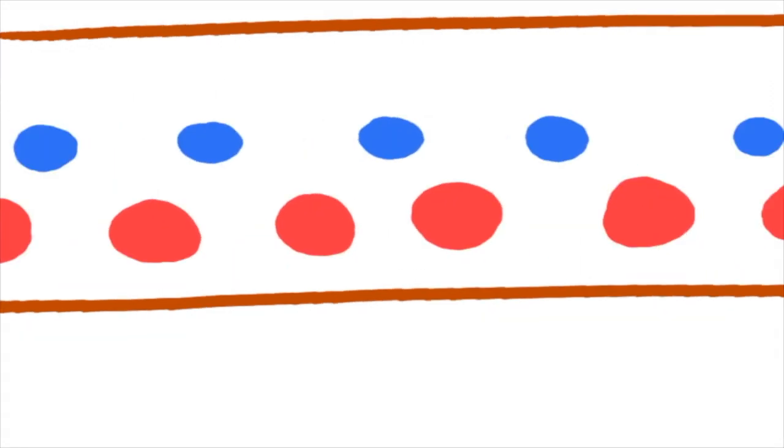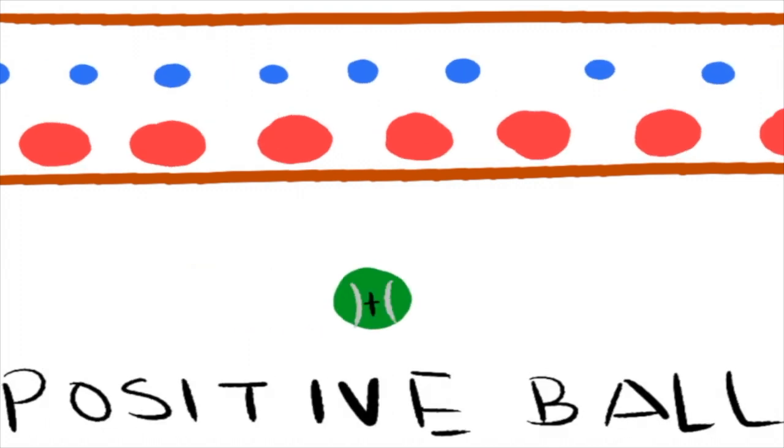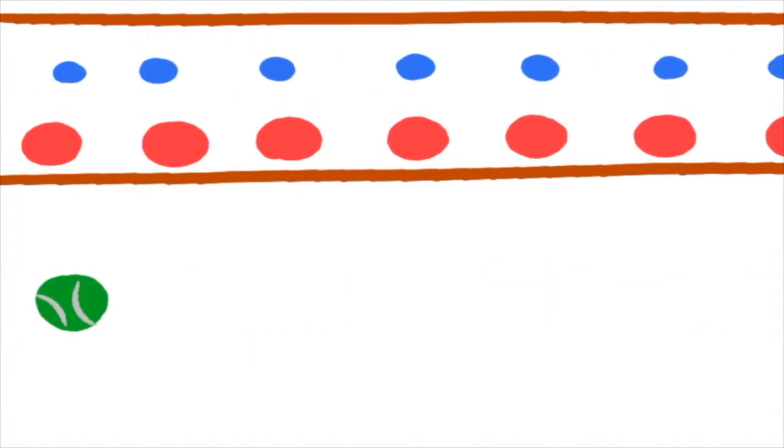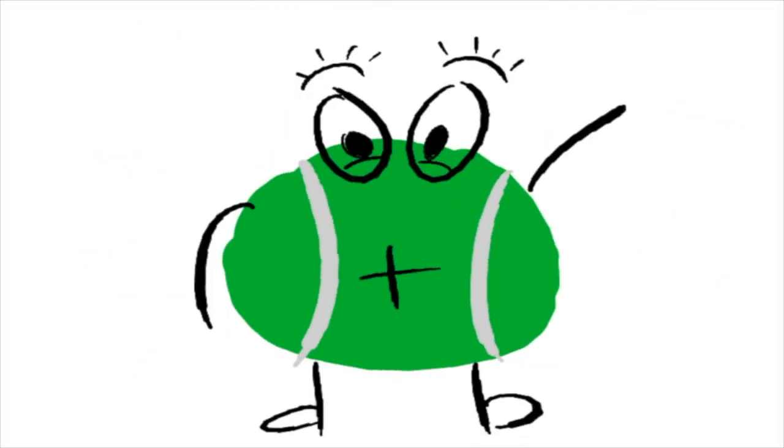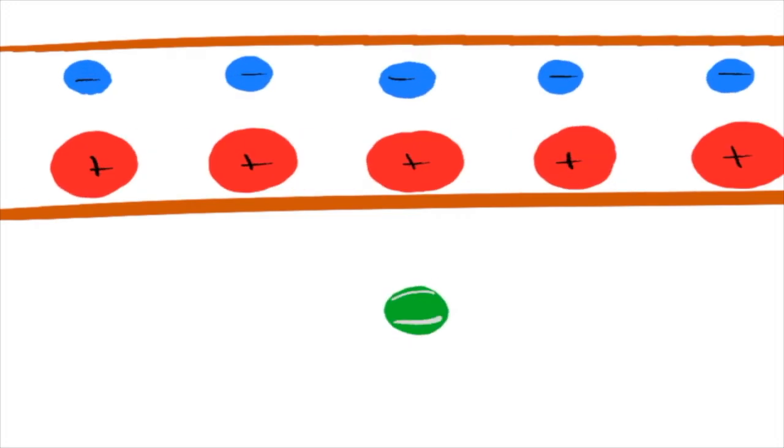If I throw a positively charged ball this way at the same speed as the electrons, you might think that nothing happens to it since the total charge on the wire is zero. But let's look at the wire from the ball's point of view. Since the ball is traveling with the electrons, they appear stationary. The positive charges look like they're moving the other way.